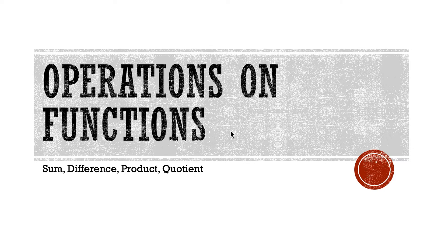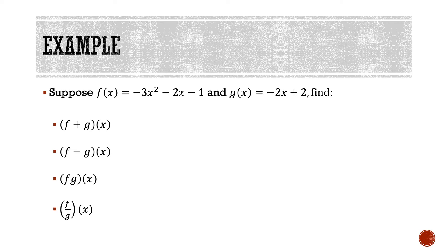Or in other words, adding two functions together, subtracting them, multiplying them, or dividing. We're going to begin with an example where they give us two functions: f(x) = -3x² - 2x - 1, and g(x) = -2x + 2. The first thing we want to do is add those functions together.